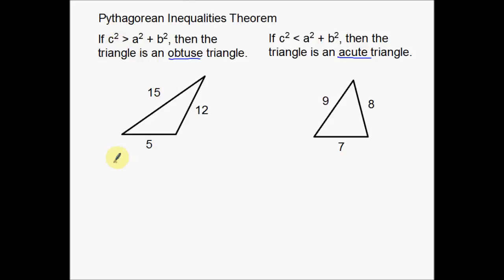So 15 is my hypotenuse. That's going to go in for my c squared. Now I'm going to do a little question mark, I'm going to come back to this here in a minute. 15 squared, is that going to be equal to, let's do 12 squared plus 5 squared. There are my legs.